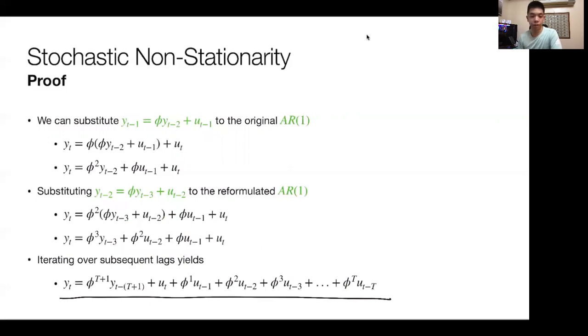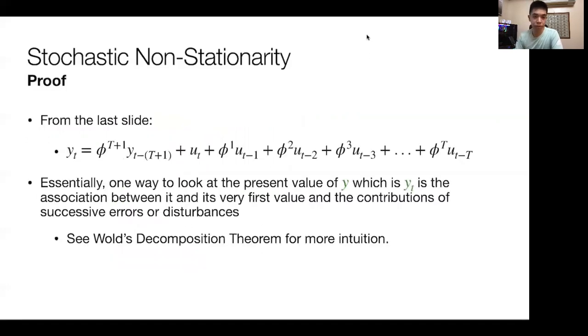You can see that you now get phi terms which are cubed, squared, depending on how many times you resubstitute it into the equation. And if you iterate over subsequent lags, you get this expression here. So from the last slide, essentially, one way to look at the present value of today is just the sum of the association between it and its very first value.